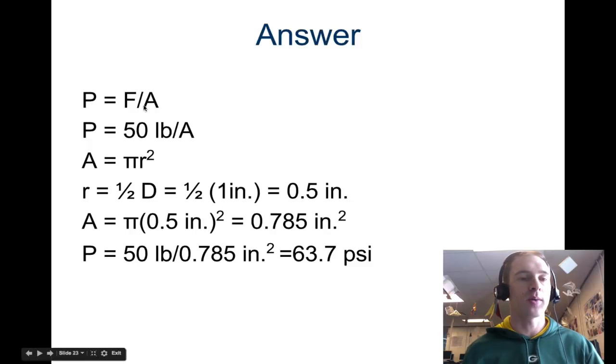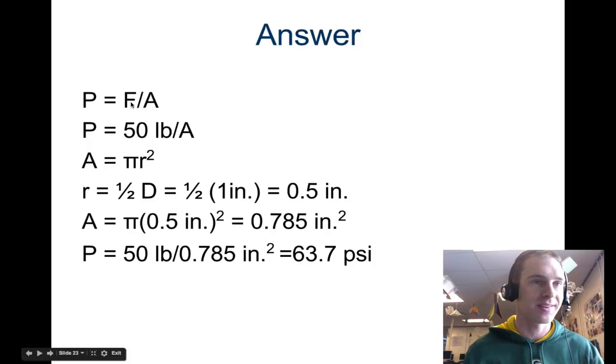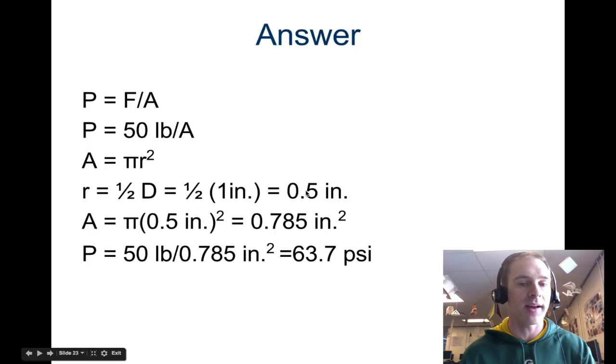And you should have gotten this equation. We knew that the force is 50 pounds. The area is pi r squared. Radius is half of that diameter which is 0.5 inches. So when you plug it into your pi r squared equation, you get 0.785. And 50 pounds divided by that is 63.7 psi.